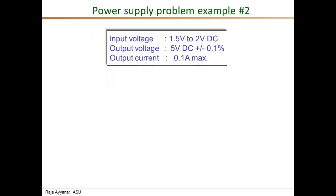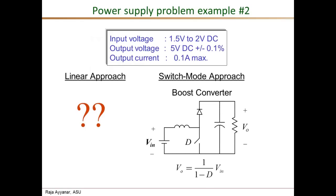Let's consider a slightly different problem. I have a low input voltage of 1.5 to 2 volts, and I still want a precisely regulated 5 volts output at a fairly low current level. There is actually no way to do this using a linear approach — series or shunt linear regulators cannot boost the input voltage to get a higher output voltage. In a switch mode power electronics approach, however, there is a converter called a boost converter. Using it, we can get any higher voltage at the output compared to the input voltage, done easily and at very high efficiency.